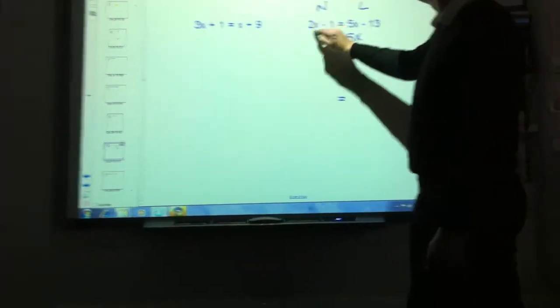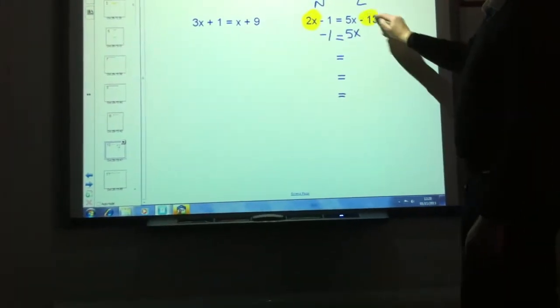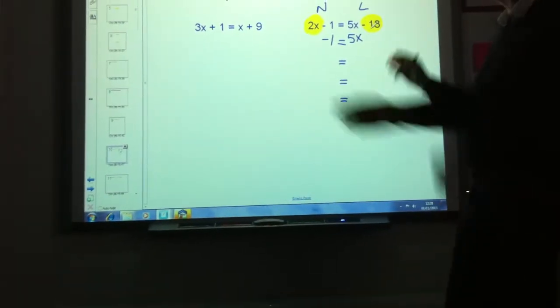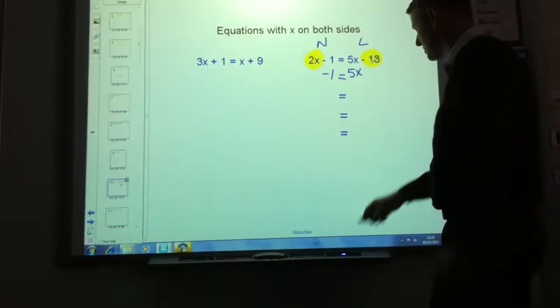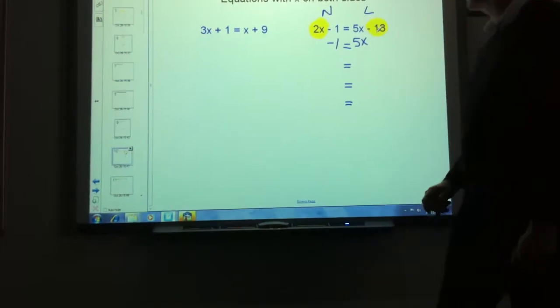This time what needs to swap over is that two x and the minus thirteen. So we're going to do again a double float and a double ping. Let's have a look at how that works.